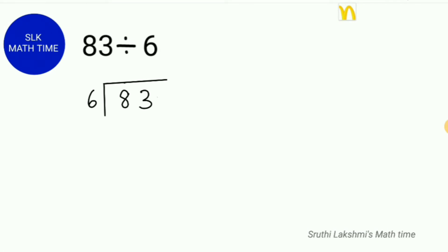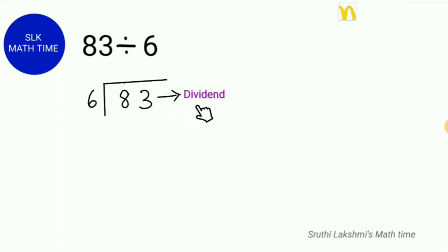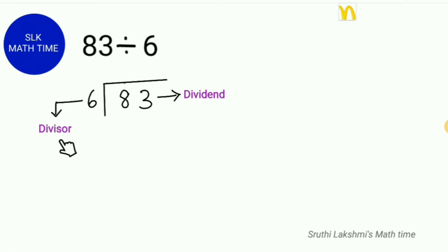Let's see an example: 83 divided by 6. Here 83 is the dividend — the number that is getting divided into equal parts. And 6 is the divisor, which indicates how many equal parts we are dividing the dividend into.